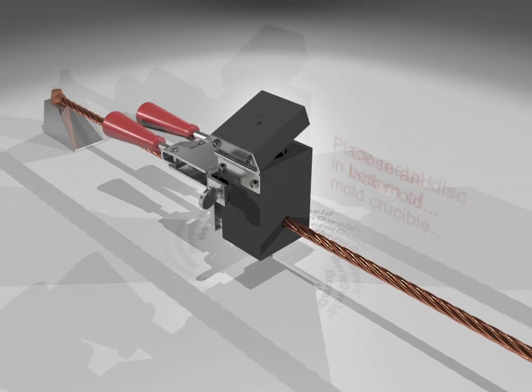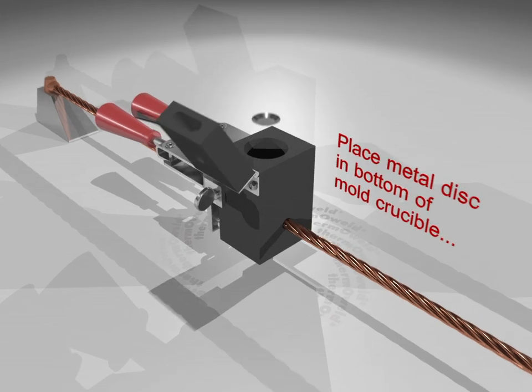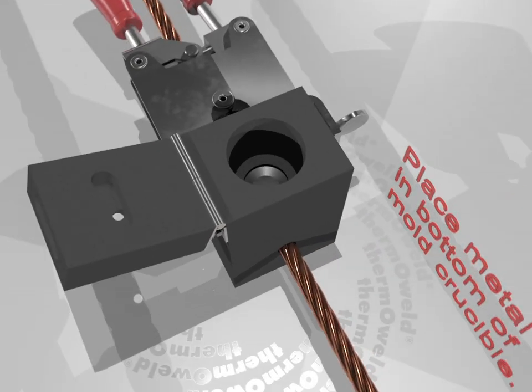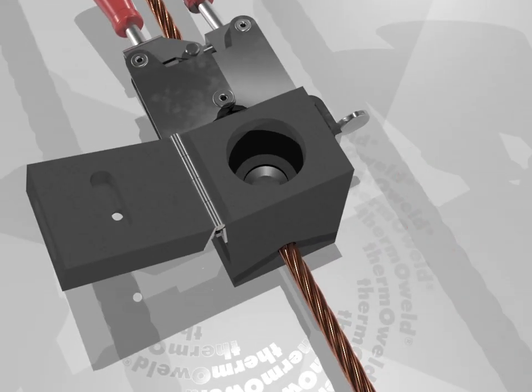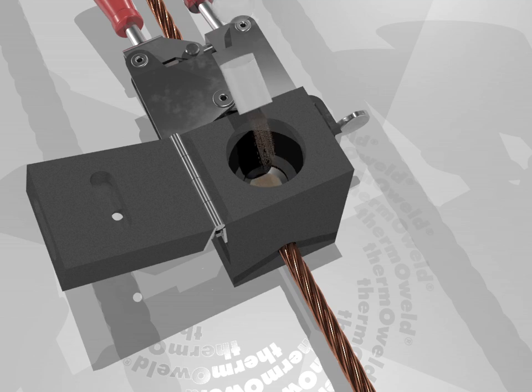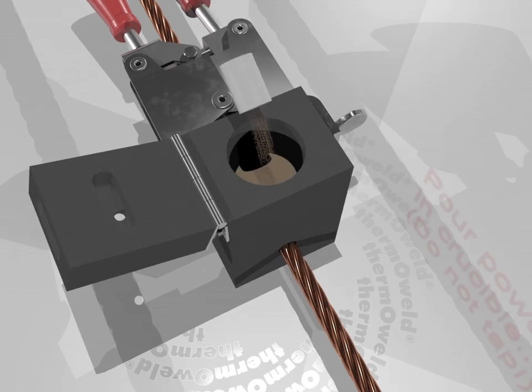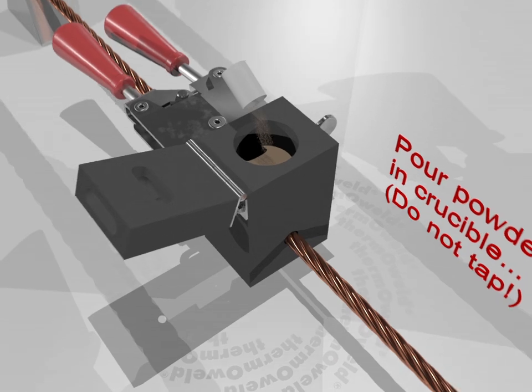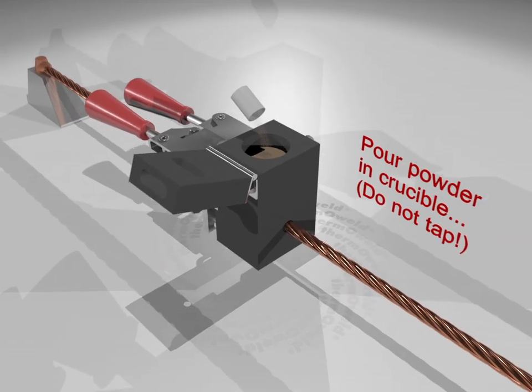Raise the EZ-Lite lid. Place the steel disc into the bottom of the crucible. Carefully add the proper weld metal into the mold. At the bottom of the weld metal container we pack our starting powder. Make sure you don't release any of the starting powder by tapping the tube.